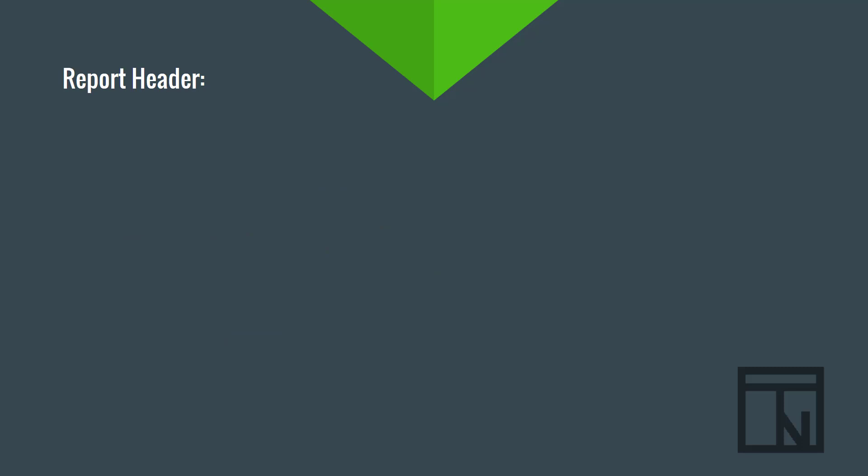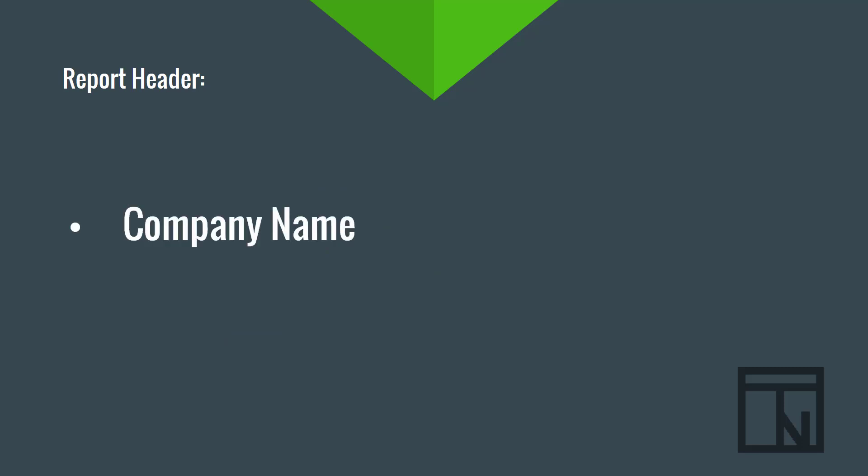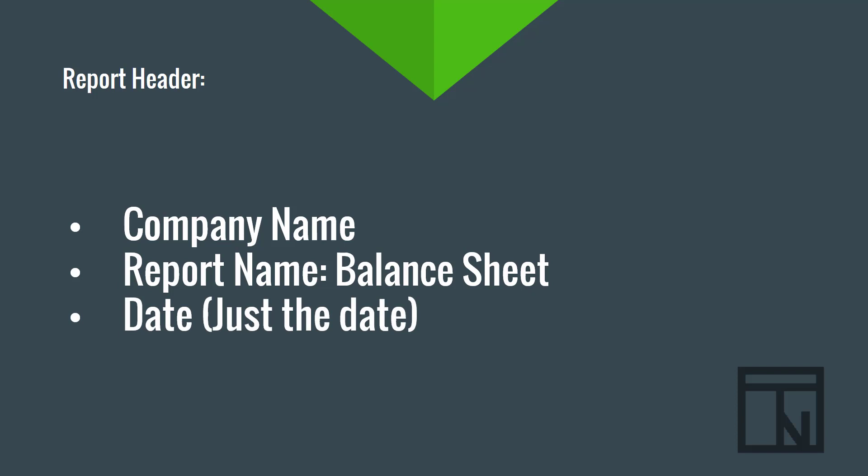Just like with the income statement, we have a header that begins the report. We start with the company's name, then the name of the report — balance sheet — and then we list the date. The balance sheet is the one report that's different from all the others. All the others show numbers over a period of time, but a balance sheet is a snapshot of a single day. It always takes place on the last day of the fiscal period. So we just put that date — for example: Your Company, Balance Sheet, December 31st, 2020.